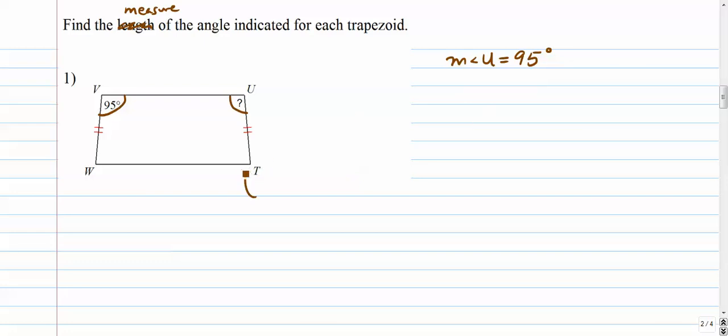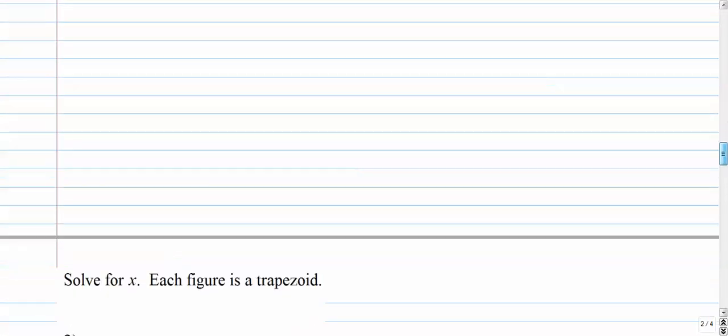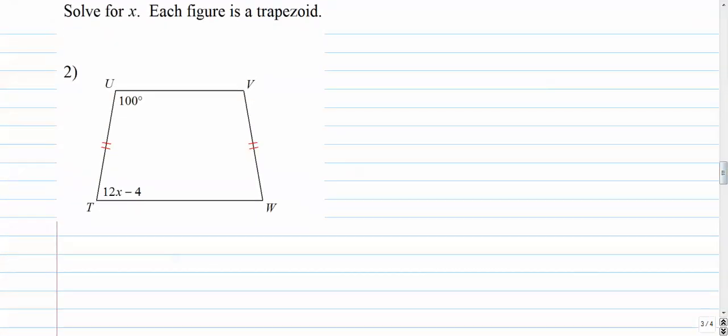If the question were asking you angle T, you would have to find simply the supplement, 180 minus 95. Angle T is 85, angle W, of course, is the same. That's a pretty simple idea. Let's see if we can do this one.